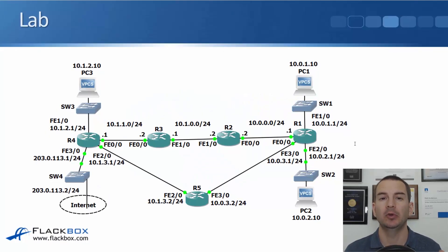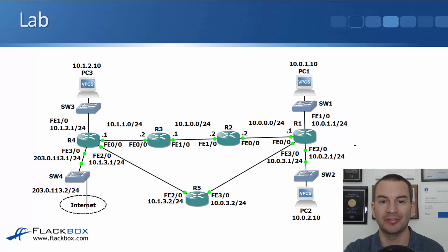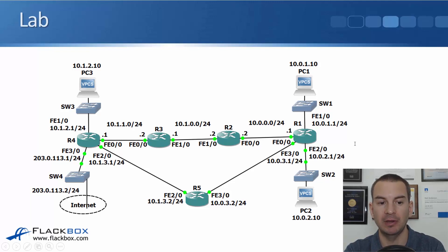In this lecture I'm going to configure default routes and also load balancing. It's the same lab setup as before - we've got routers R1 to R5 and PC1, PC2, and PC3 clients. The routers have all been configured with their IP addresses and static routes between all the different subnets. The one interface that hasn't been configured yet is FastEthernet 3/0 on R4. We're going to configure that with a public IP address 203.0.113.1 going out to an internet service provider, with the next hop at 203.0.113.2.